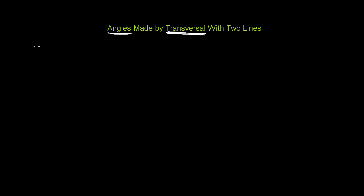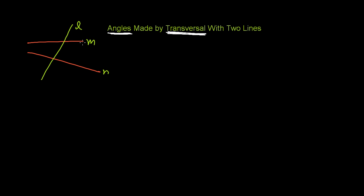Now I'm going to talk about the transversal line. What is a transversal line? A transversal line is that line which intersects two or more than two lines at different points. Like here is one line, here is another line. If a line is cutting both lines — let's say this is line M and this is line N — and let's say this line L is intersecting M and N at two different points, point P1 and point P2. So this line L is called a transversal line.